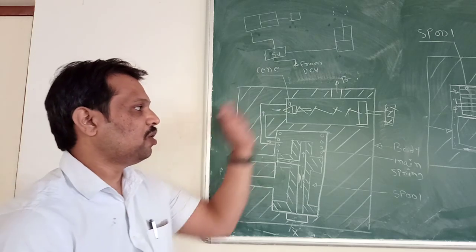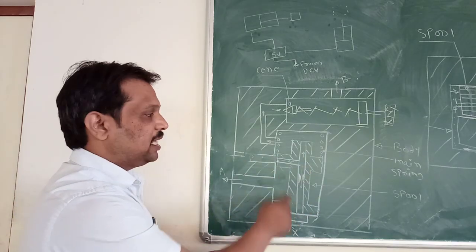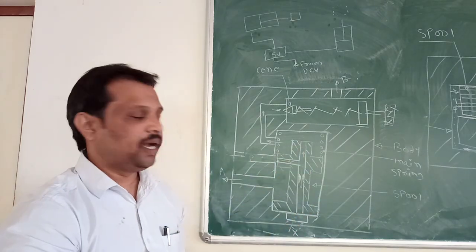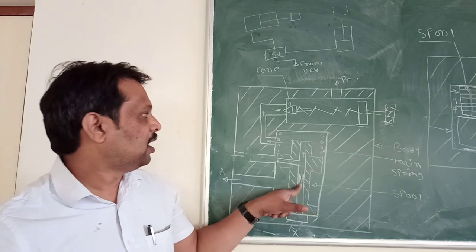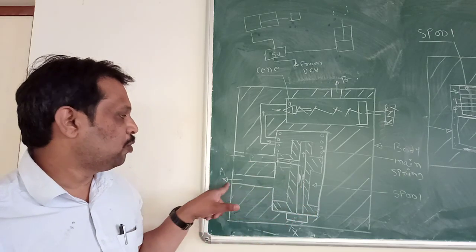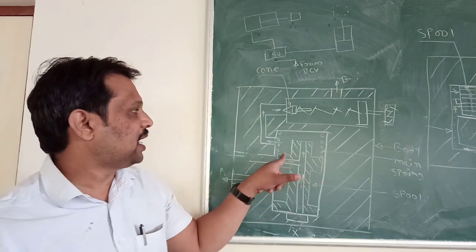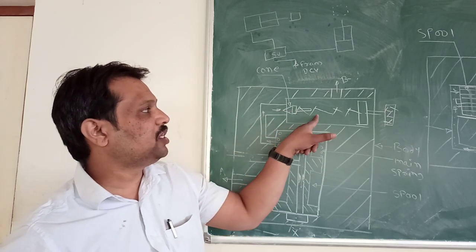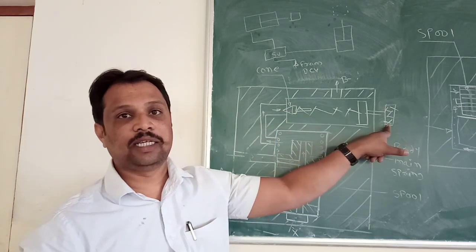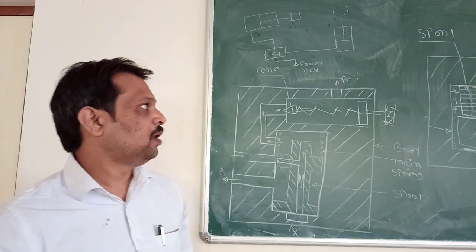This is your valve body. In this valve body, this is the spool. In this spool, there is a passage provided, and in this passage there is an orifice. After that, port P is there, port A, and port B. This is the main spring. This is the conical element on which the spring is mounted, and this is the adjusting screw for the pressure setting adjustment.